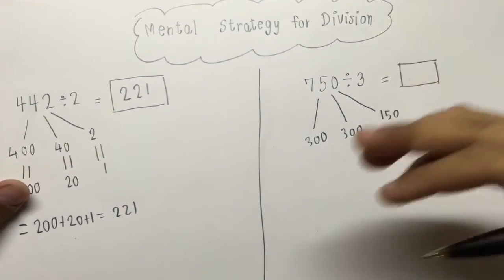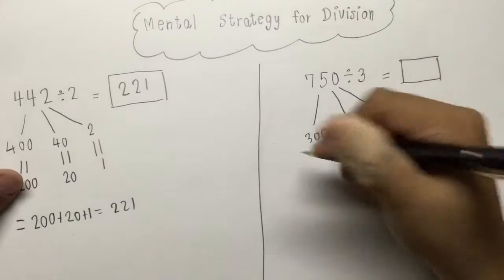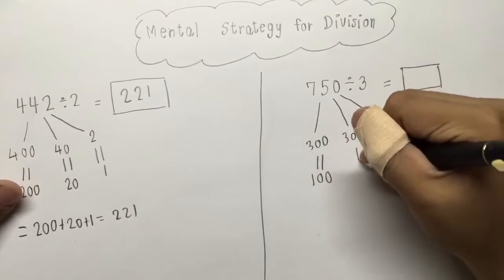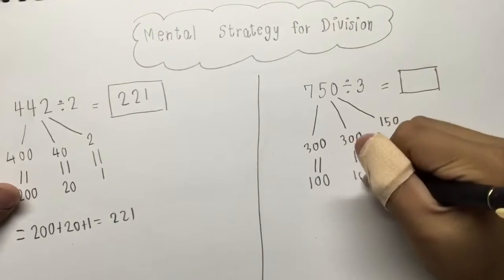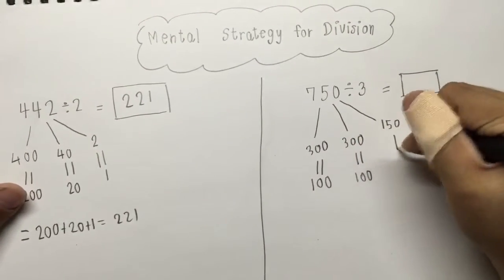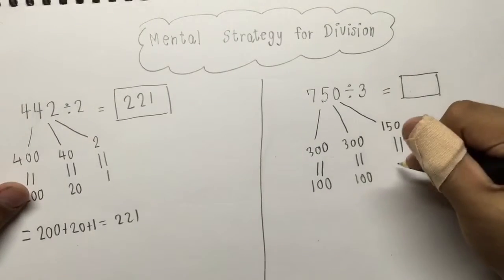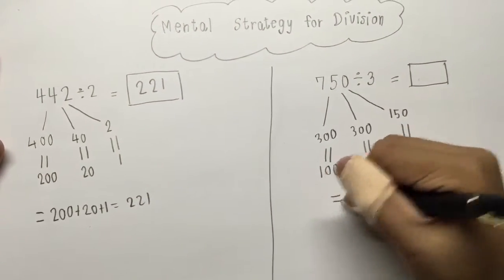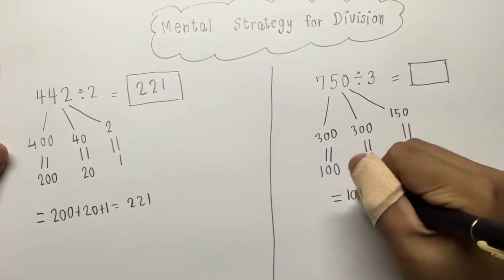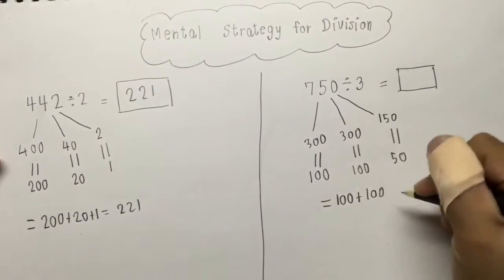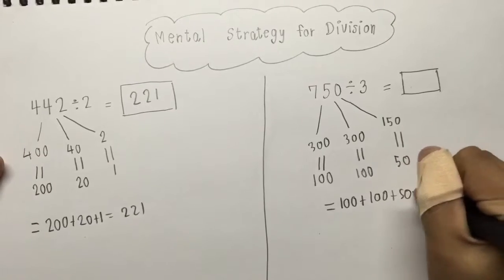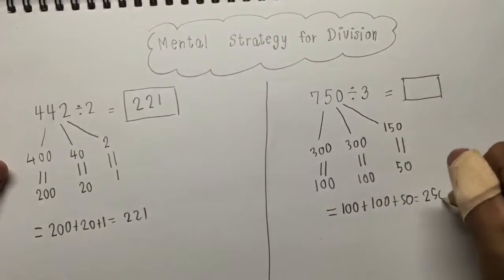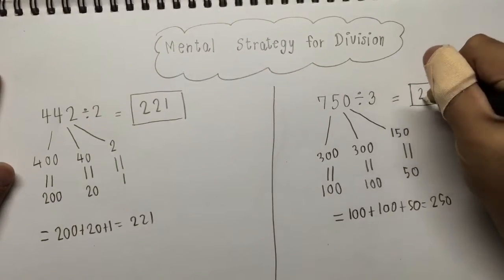So, 300 divided by 3 equals 100. And 300 divided by 3 equals 100. And 150 divided by 3 equals 50. So the answer equals 100 plus 100 plus 50, which equals 250.